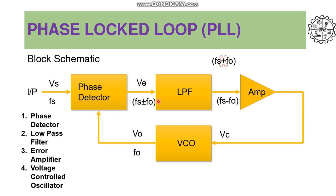Once locked, the PLL tracks the frequency changes of the input signal. Thus PLL goes through three different stages: number one, free running when no input is applied; then it goes into the capture range; and then into the lock or tracking range. So we observe three stages — free running, capture, and lock range.